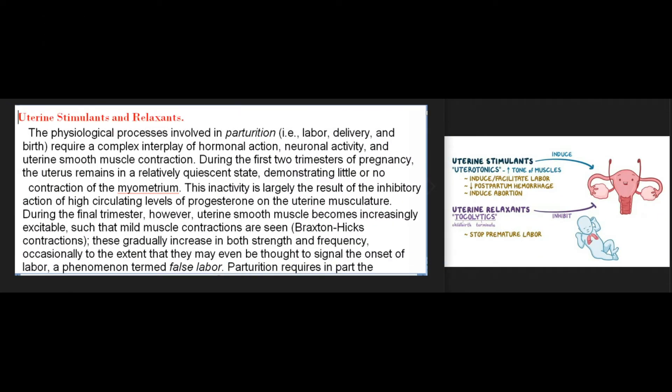Uterine stimulants and relaxants. The physiological processes involved in parturition — i.e., labor, delivery, and birth — require a complex interplay of hormonal action, neuronal activity, and uterine smooth muscle contraction. During the first two trimesters of pregnancy, the uterus remains in a relatively quiescent state, demonstrating little or no contraction of the myometrium. This inactivity is largely the result of the inhibitory action of high circulating levels of progesterone on the uterine musculature.